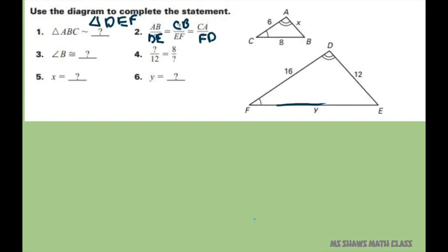Angle B is congruent, this angle, we'll just do three lines here, is congruent to angle E.